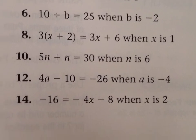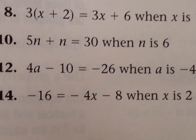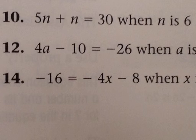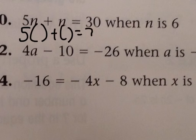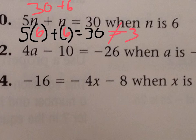Okay. Let's look at number 10. So it says 5n plus n equals 30 when n is 6. So what I'm going to do is I'm going to rewrite. Okay. So it says n is 6. I'm going to pop that in there on both sides. So 5 times 6 is 30 plus 6 is 36.